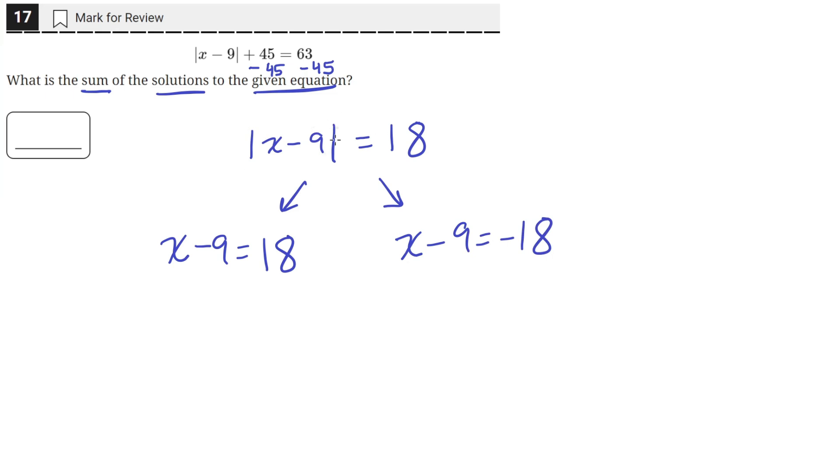Because the output of an absolute value is always the positive value or the absolute value of it, then this is basically saying that whatever is inside, the same solution can either be positive or negative. So that's why we have the positive 18 and the negative 18.